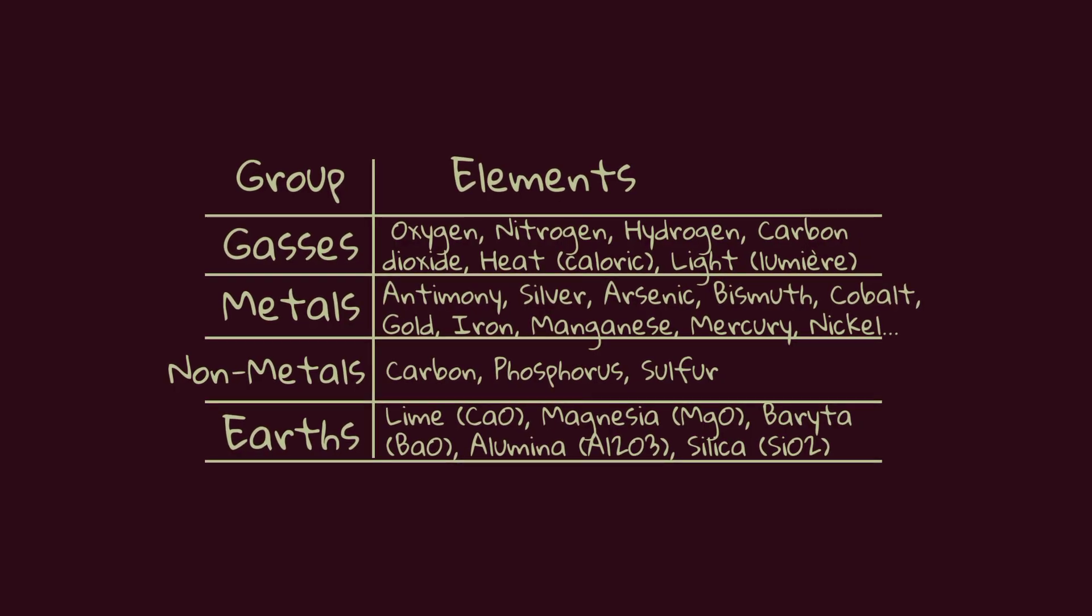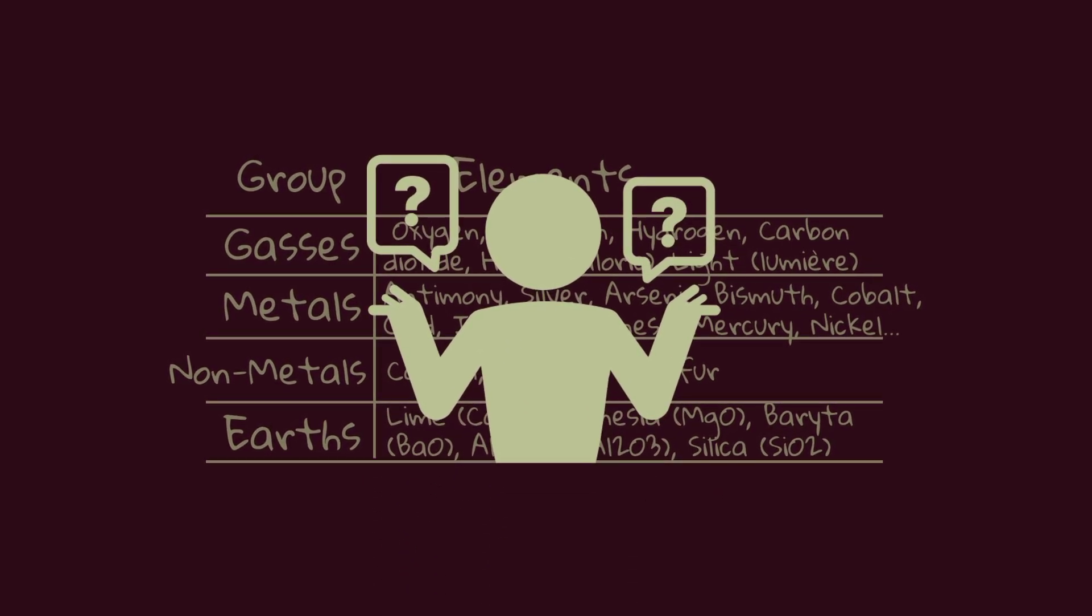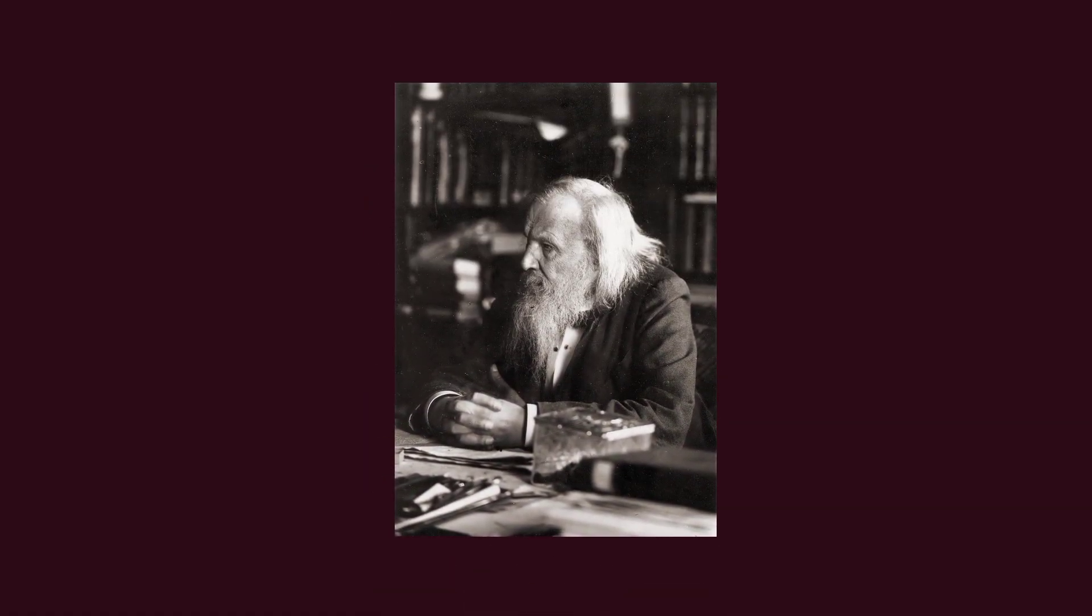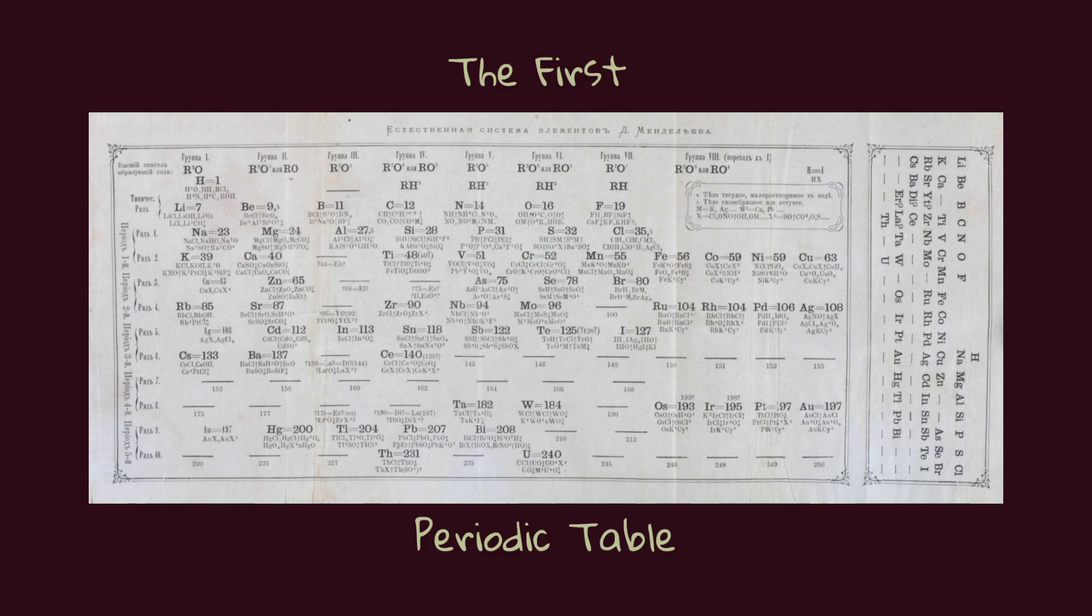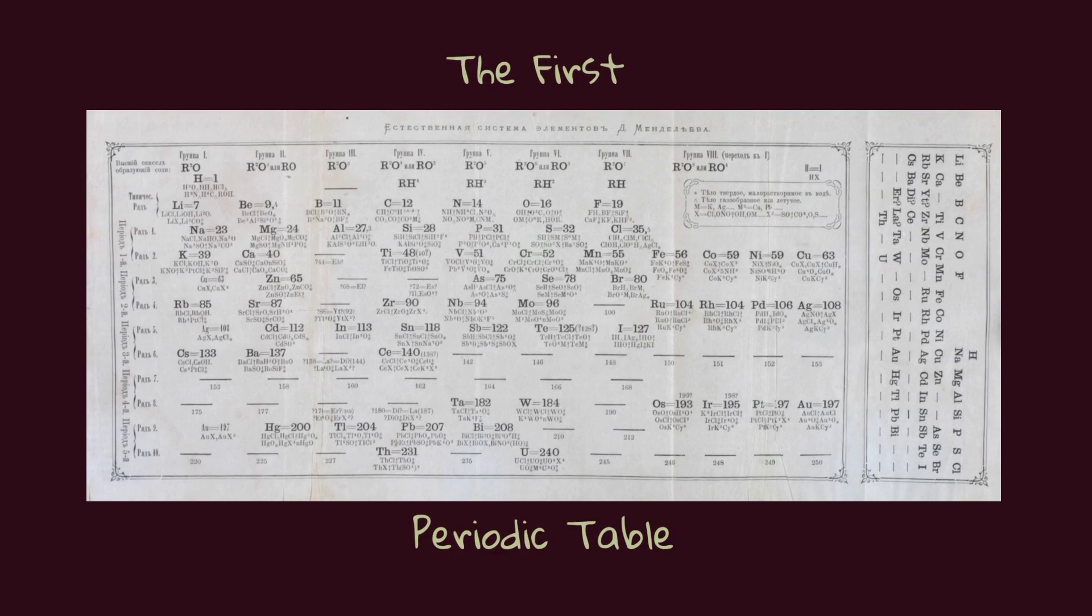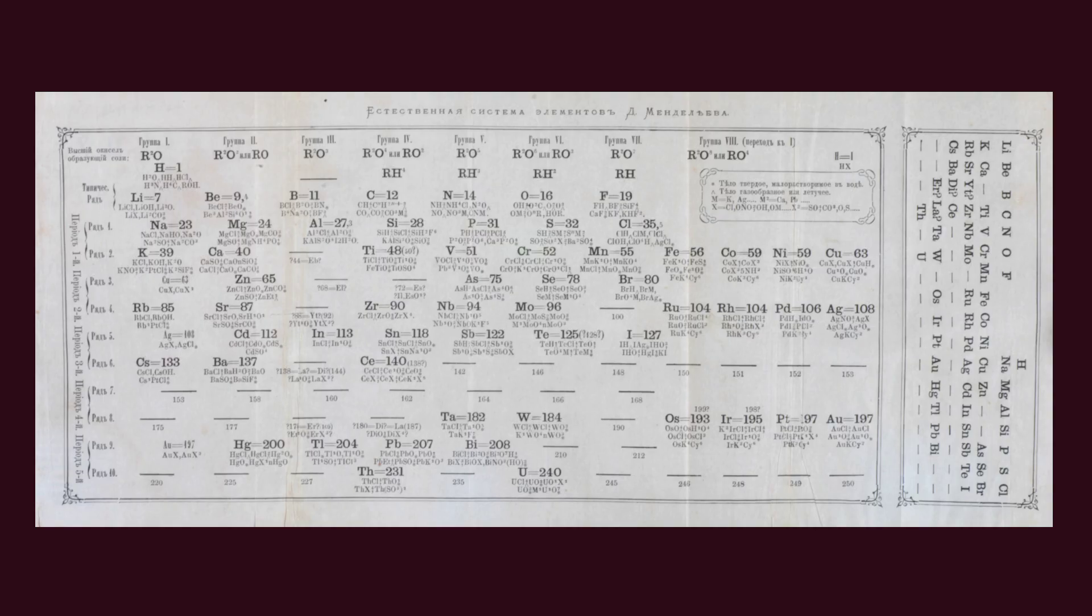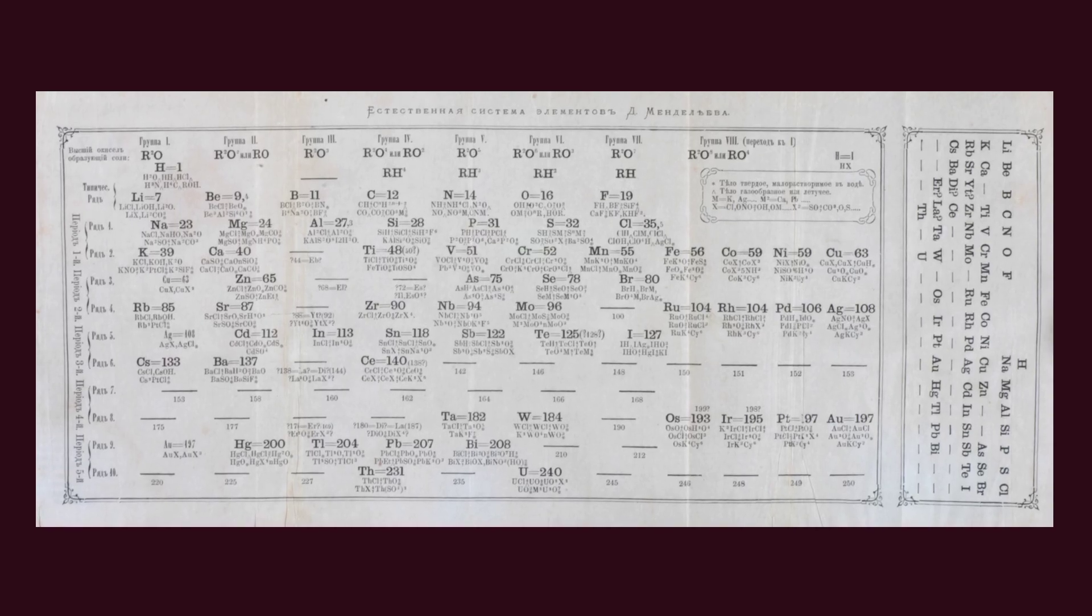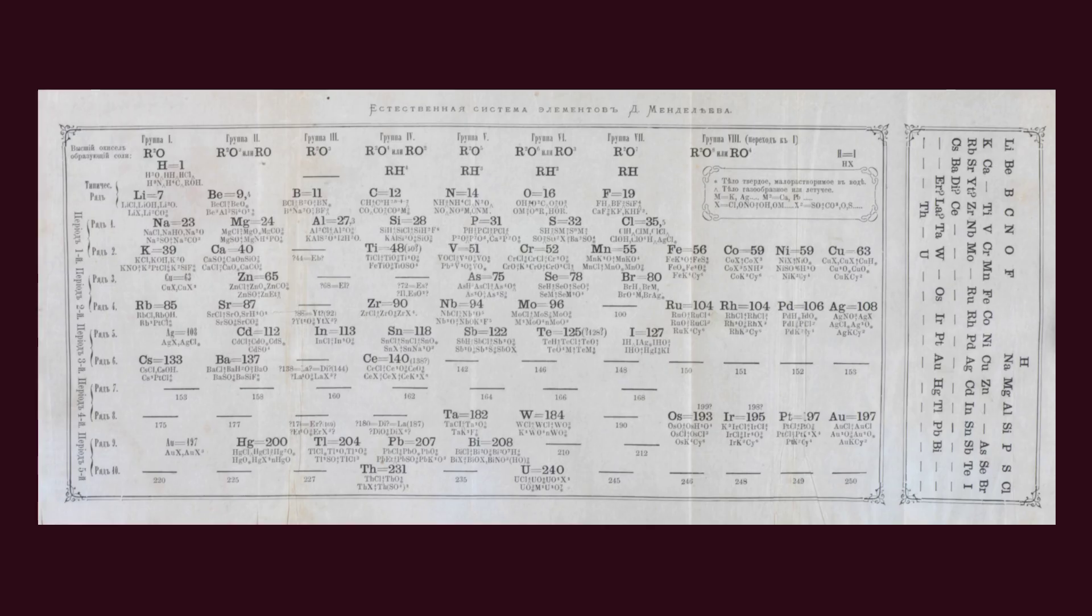In the mid-19th century, the number of known elements had increased, and a way to organize this information was needed. This is where Dmitry Mendeleev came onto the stage. Mendeleev created the periodic table by arranging the elements according to their atomic weights and chemical properties. Mendeleev's table was so ingeniously designed that it not only organized the known elements, but also accurately predicted the existence and properties of elements yet to be discovered.